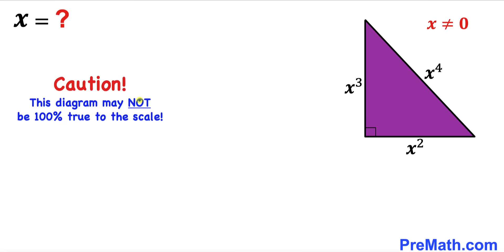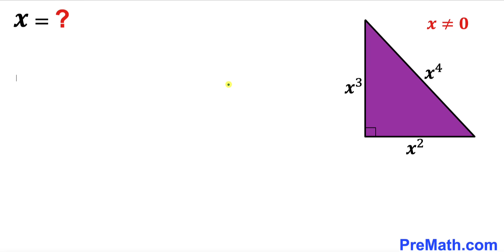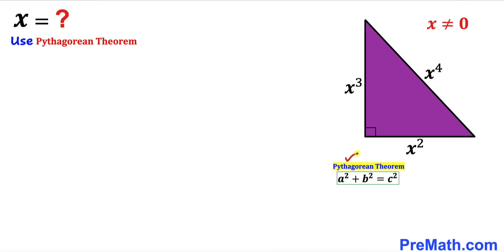Please keep in mind that this figure may not be 100% true to scale. Since we are going to solve for x and we know that this is a right triangle, we are going to use the Pythagorean theorem: a² + b² = c². The longest leg is side c, and I'll call the other two sides lowercase a and lowercase b.